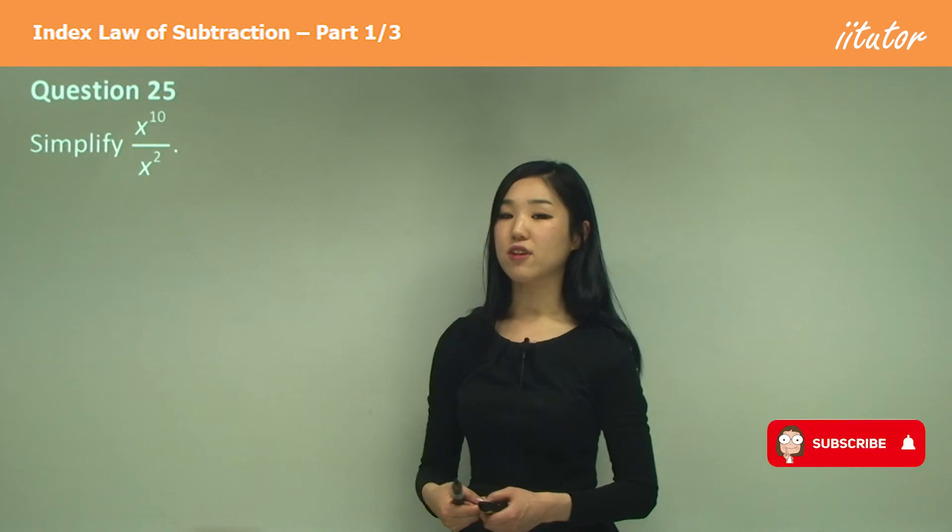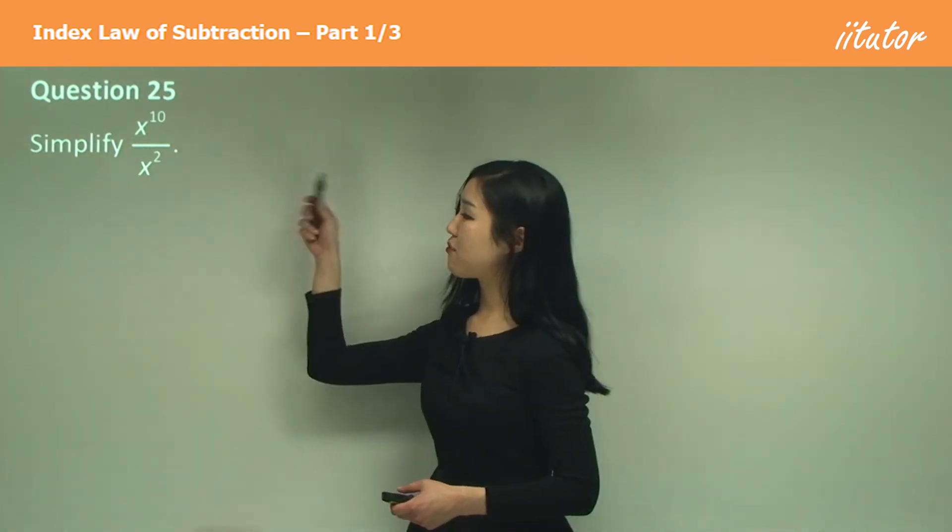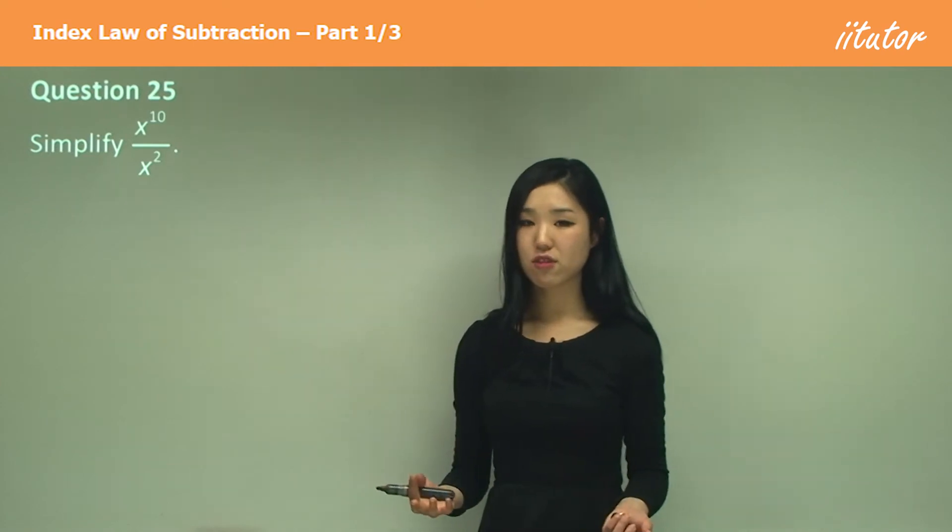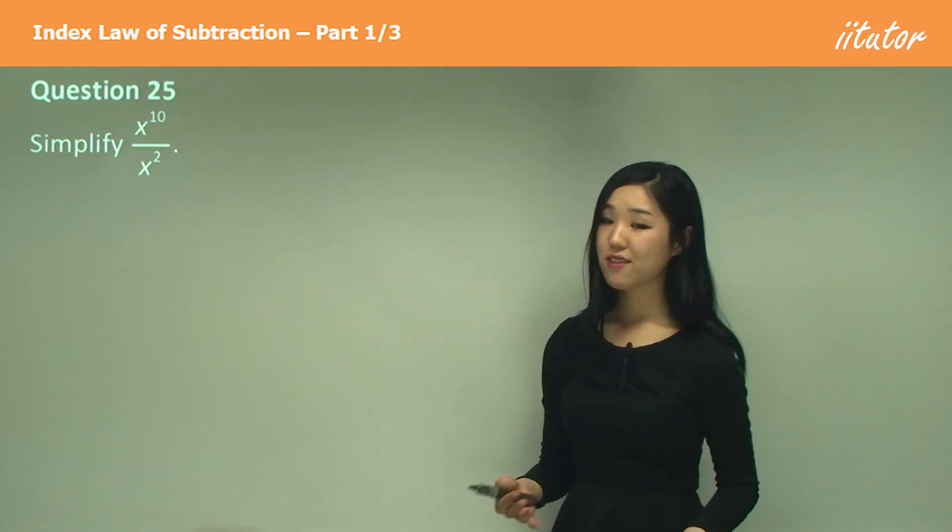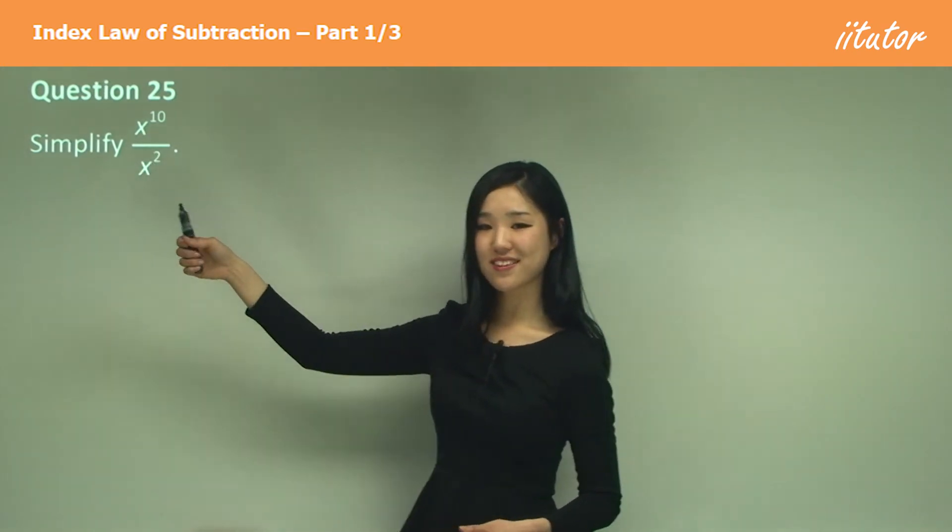Now this time we have a fraction: x to the power of 10 divided by x to the power of 2. See the fraction sign? That fraction means divide. So all we need to do is nothing different. We're dividing again. The base is the same—they're both x. So what do we do with the indices?